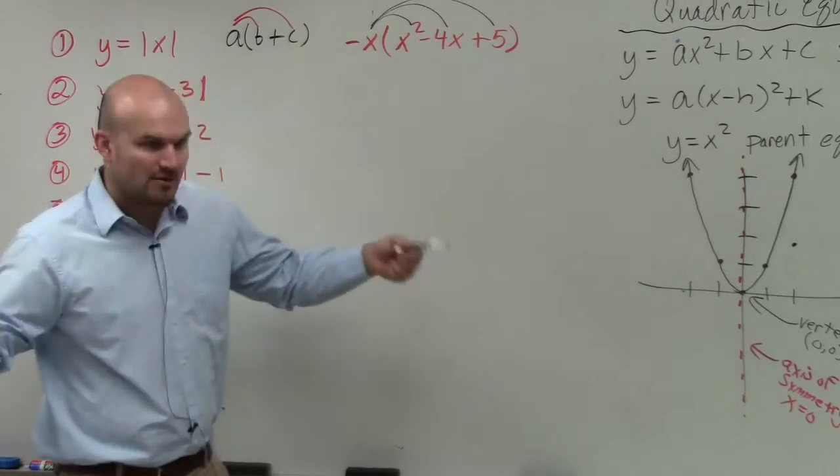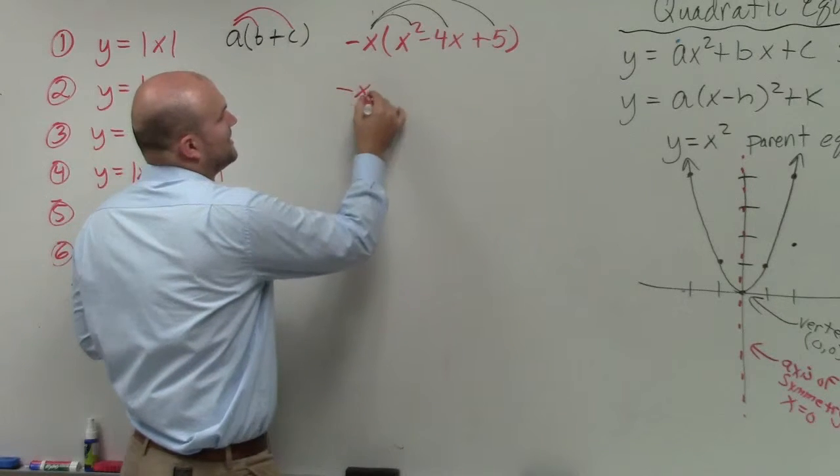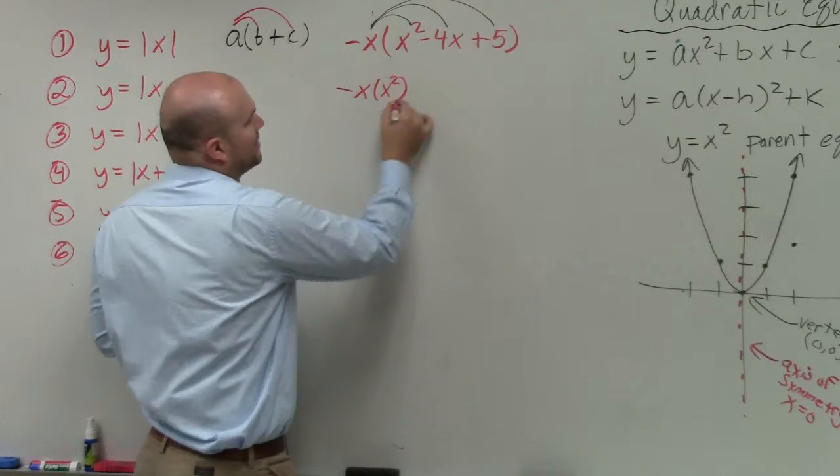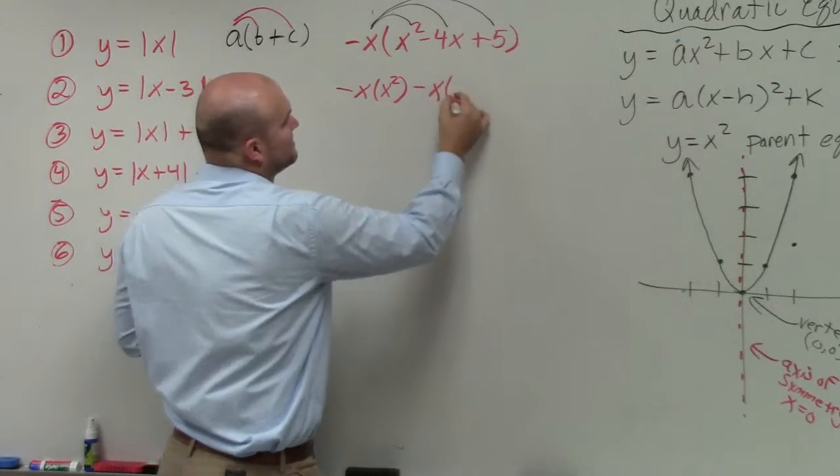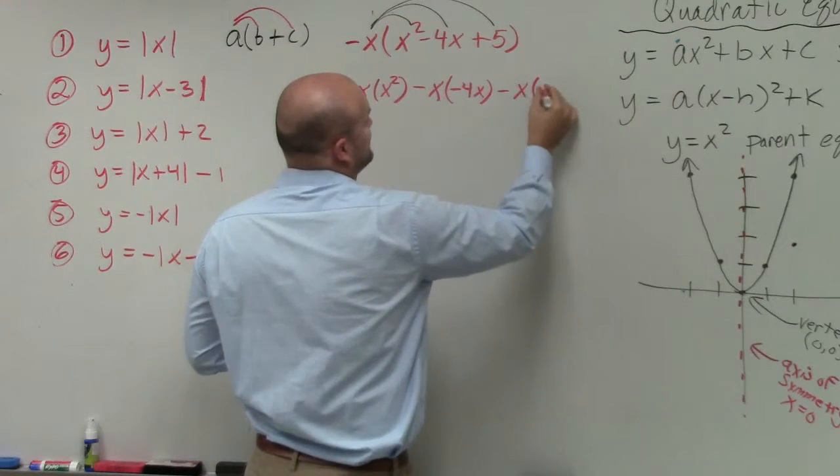So I'm going to write it all out. Now once you guys get used to this, you don't need to show this step. But I'm going to multiply negative x times x squared, multiply negative x times negative 4x, multiply negative x times 5.